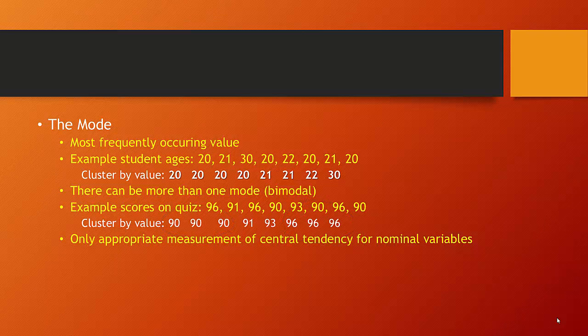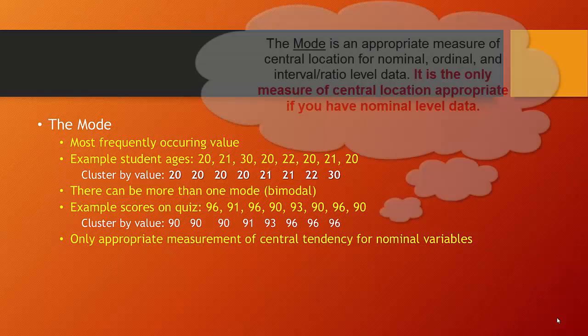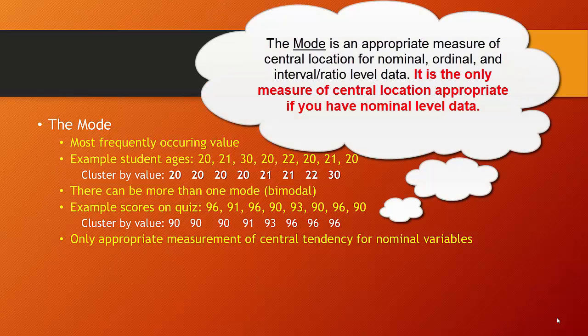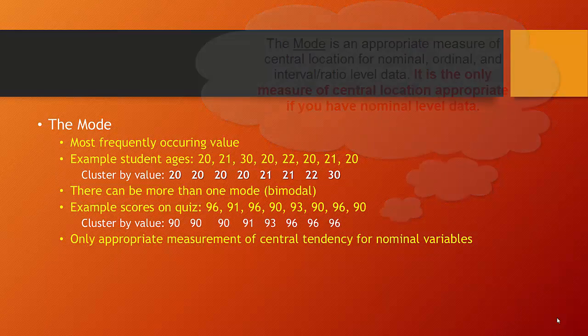If your level of measurement is nominal — where you have named categories — the mode is the only measure of central tendency that you can possibly observe.